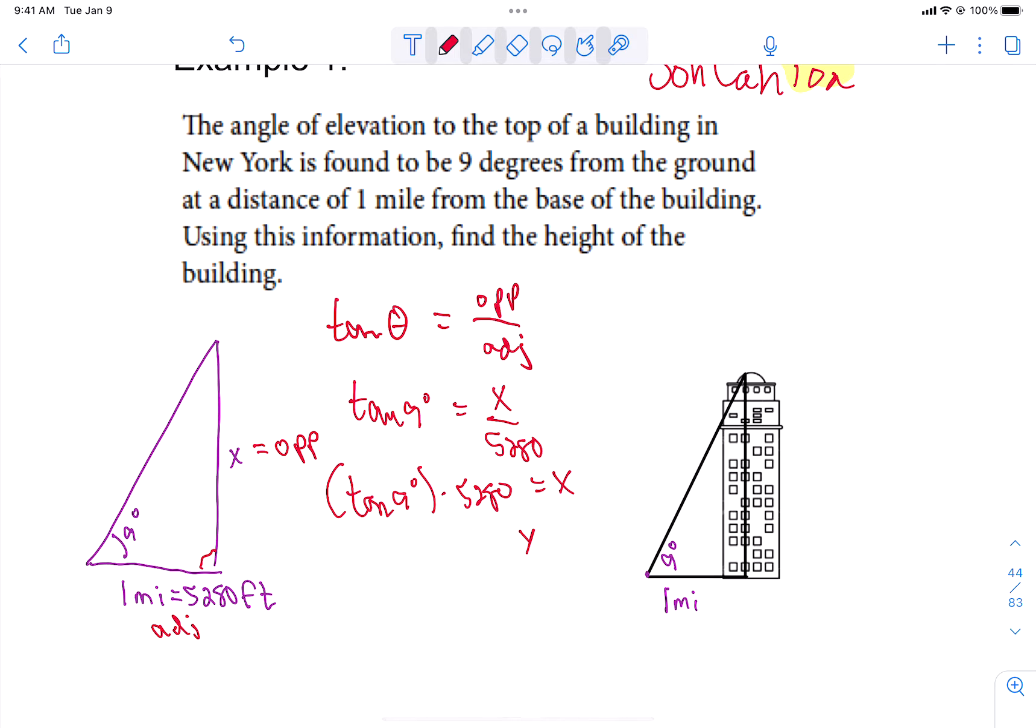So the tangent of nine times 5,280 is what we're going to do. And it ends up being, now let's round it. Now it didn't specify. So I would accept to the nearest foot or to the nearest tenth. Let's go to the nearest tenth. This is 836.3.